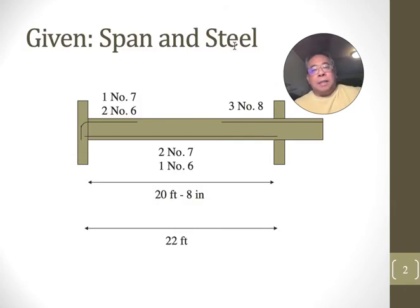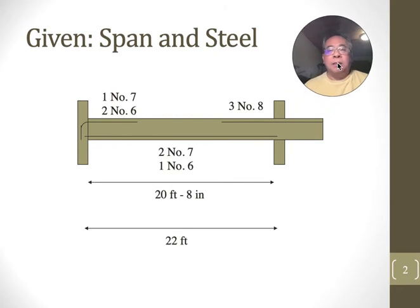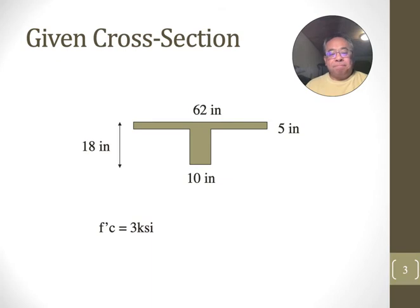Here's the problem. It's 20 foot, 8 inches, clear span. And it's got different amounts of steel at the left, middle, and right. And it's indeterminate. The cross-section is a T-beam. That T-beam is given there, and the height is 18 inches. The flange is 5 inches thick, so that means 13 inches below the flange. And the web width is 10 inches, and it's 3,000 PSI concrete.